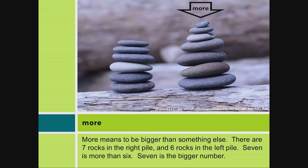More. More means to be bigger than something else. There are 7 rocks in the right pile, and 6 rocks in the left pile. 7 is more than 6. 7 is the bigger number.